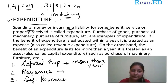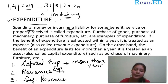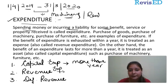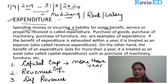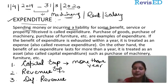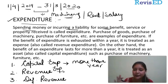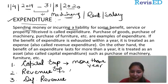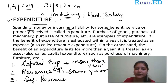Next is revenue expenditure. Revenue expenditures are those expenditures which are going to provide benefit for the same accounting period. For example, if I have paid rent or salary, when I pay rent for this year, I will obviously get benefit for this year only. Revenue expenditures will not provide benefit for more than one accounting period.